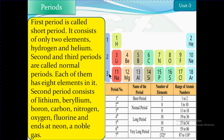The second and third periods are called normal periods. Each of them has eight elements. The second period consists of lithium, beryllium, boron, carbon, nitrogen, oxygen, fluorine, and ends at neon — a noble gas. You can see here that the second and third periods, called normal periods, each have eight elements.